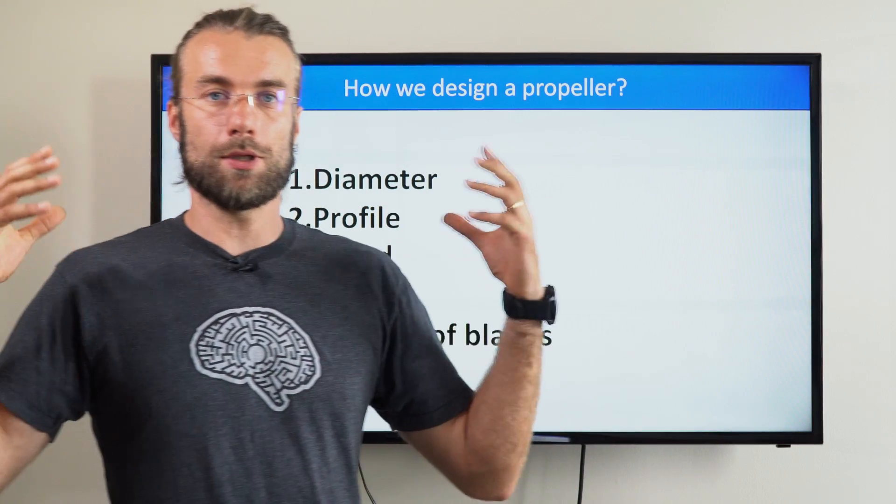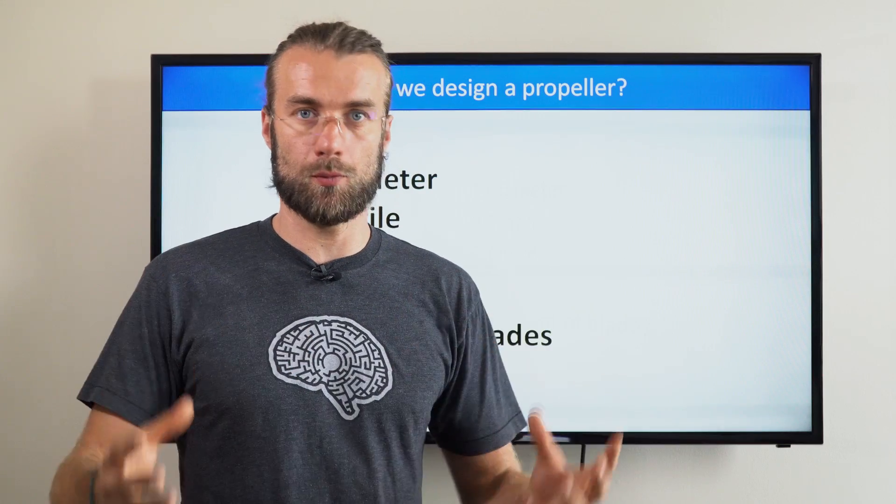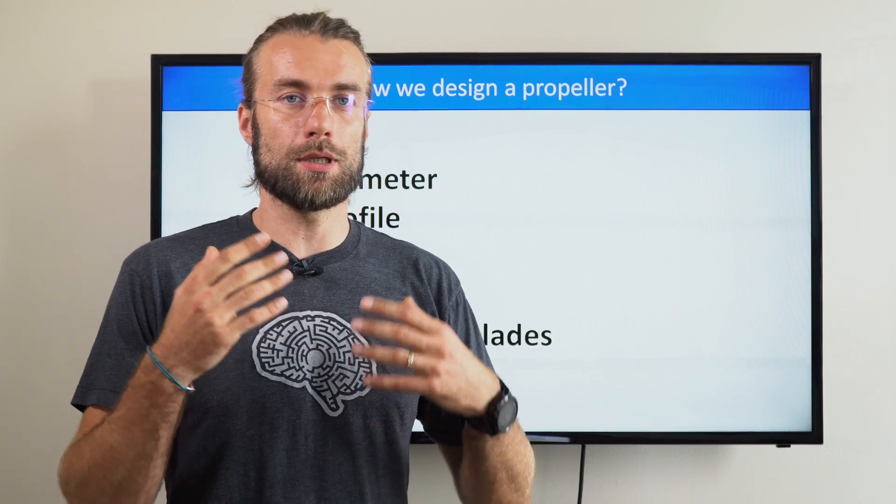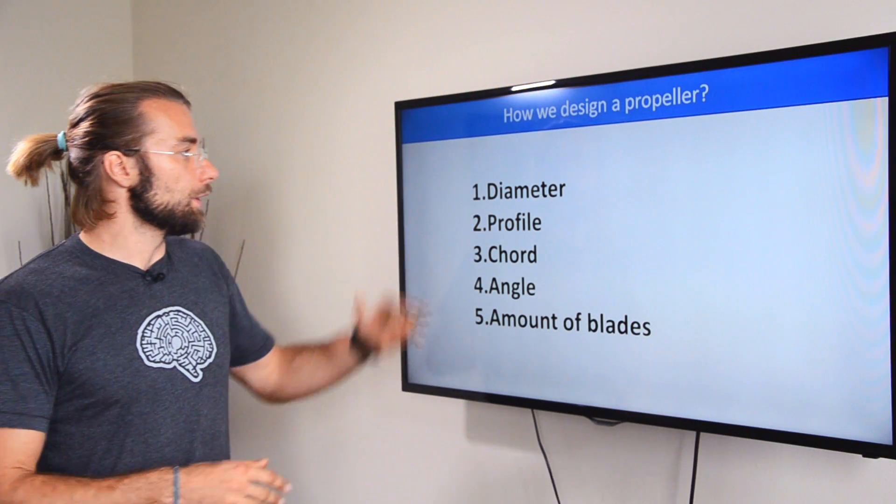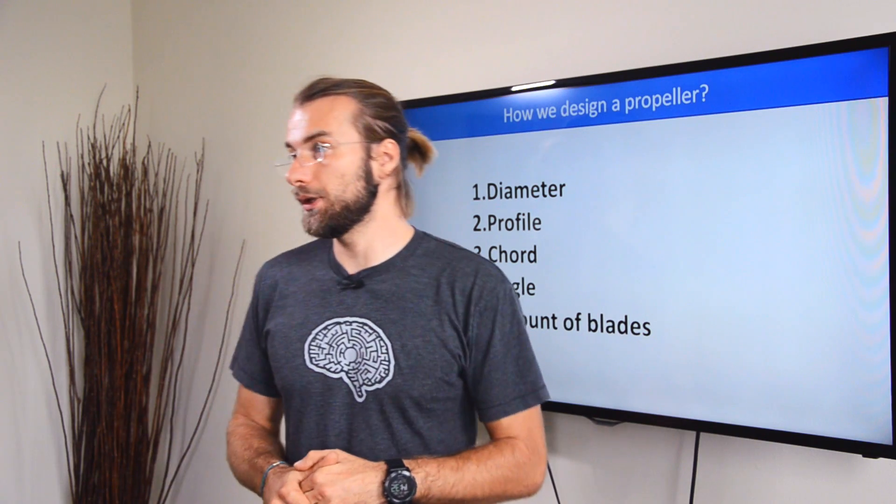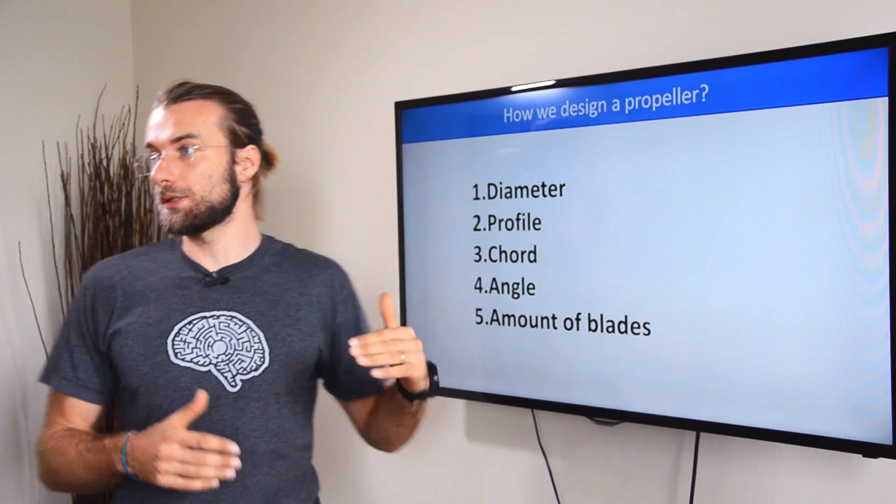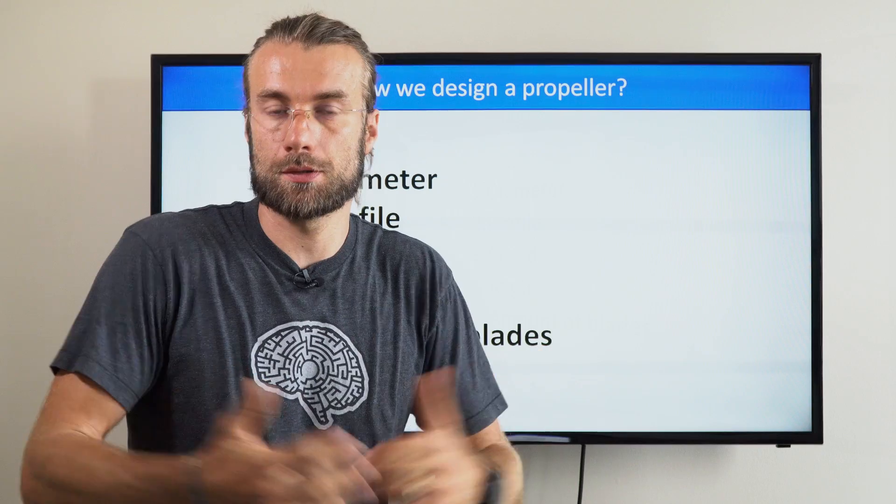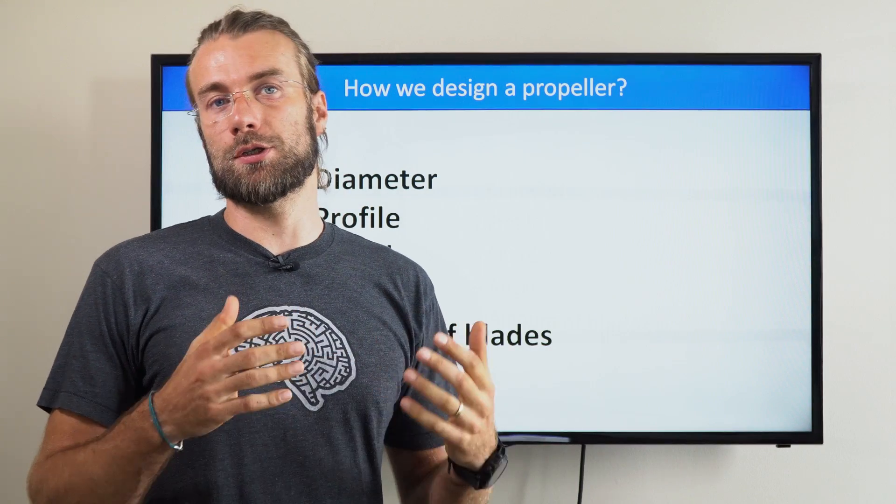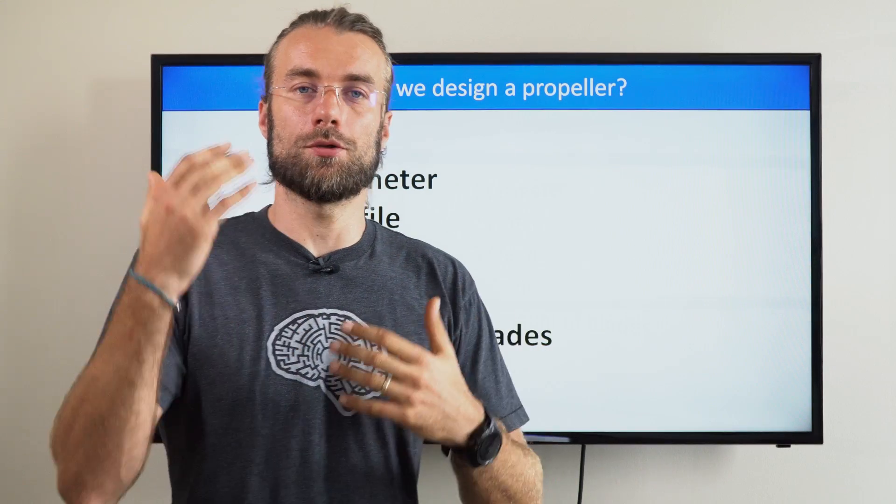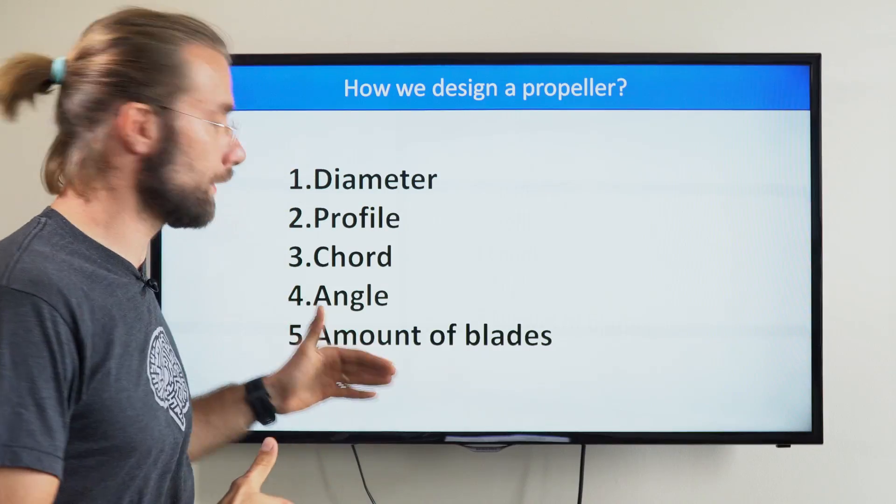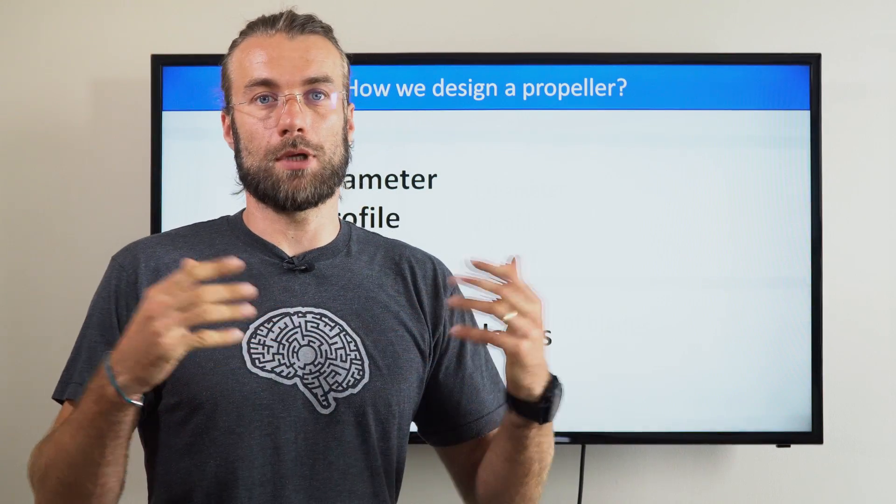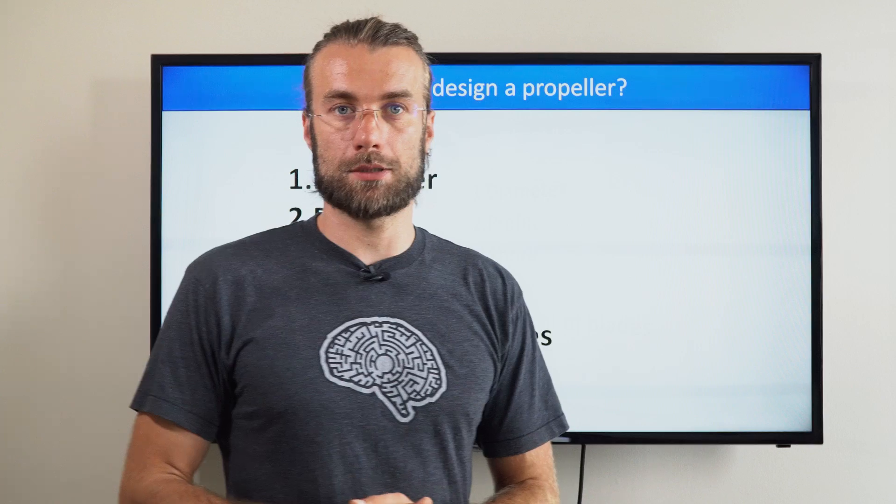Let's say, for example, we already have a prop that works very well with a specific engine and you want to make it better. You cannot just change one thing. You cannot just increase the diameter of the propeller and keep everything else the same, because the prop will suddenly give more resistance to the engine and the engine will not have enough power to reach the desired RPM. Same if you would increase the angle on the same propeller and keep all the other parameters the same.